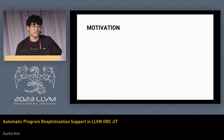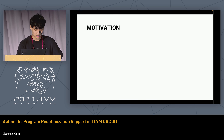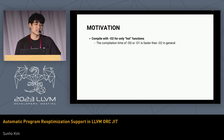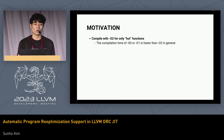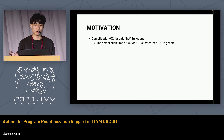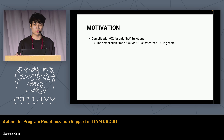What's the motivation behind this feature? One major motivation is that we want to compile with O2 for only hot functions. In general, compilation time for O1 or O0 is faster than O2. So what we want to do is first compile the function with O0, and after that function turns out to be important, we compile it again with O2.